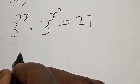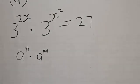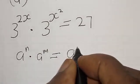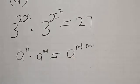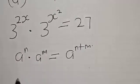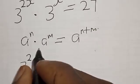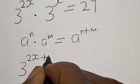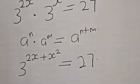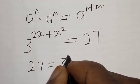Remember, if you have a raised to power n multiplied by a raised to power m, that equals a raised to power n plus m. Applying this rule, we have 3 raised to power 2s multiplied by 3 raised to power s squared, which gives us 3 raised to power 2s plus s squared, equal to 27.